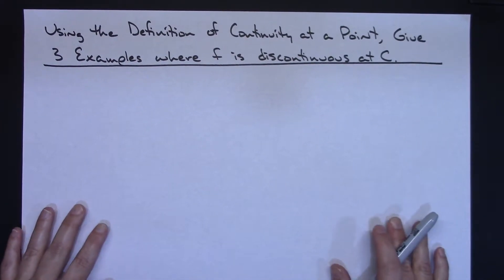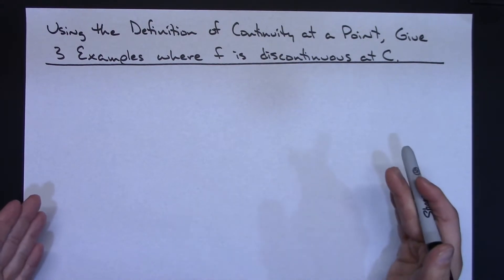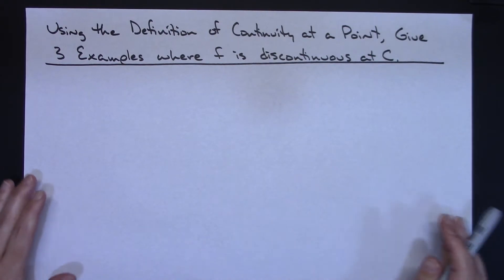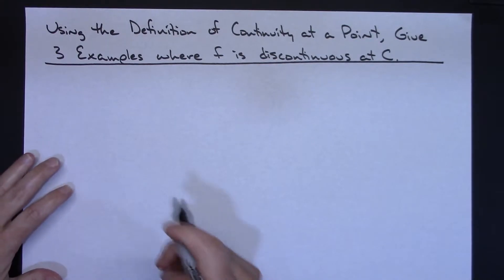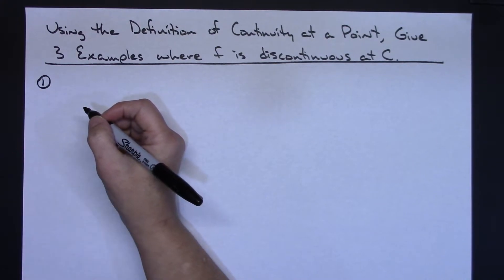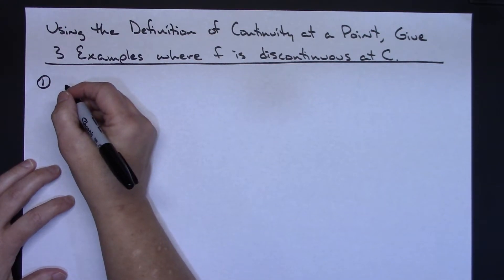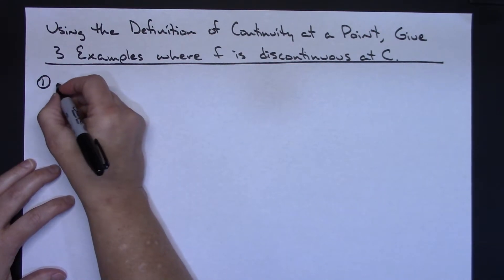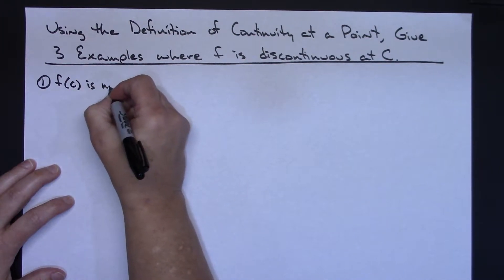For our first example, I'm going to use this definition of continuity at a point and show where f is discontinuous. The first part of the definition says f of c is defined. Well, if f of c is not defined, I'm going to have discontinuity at c.